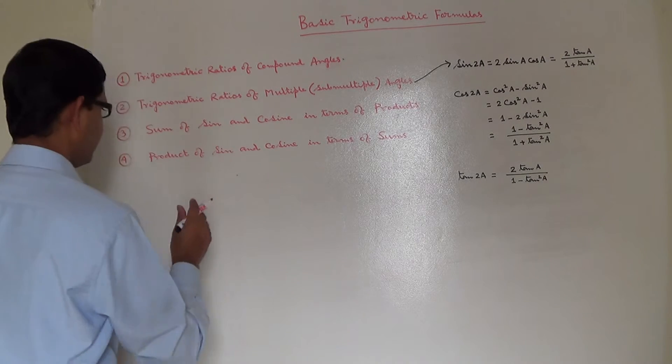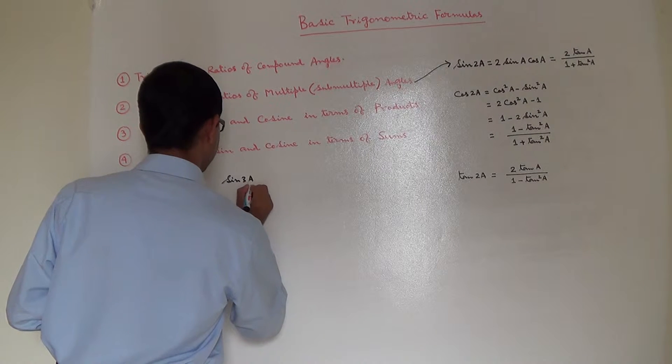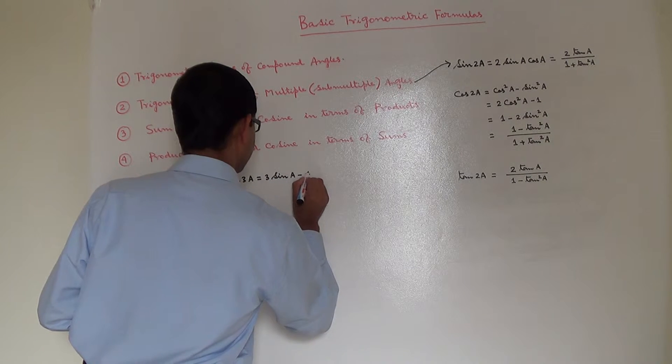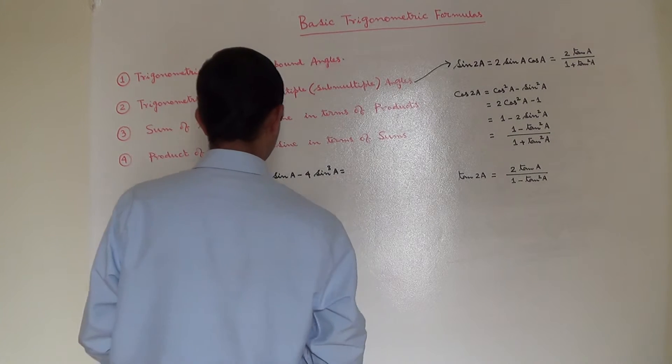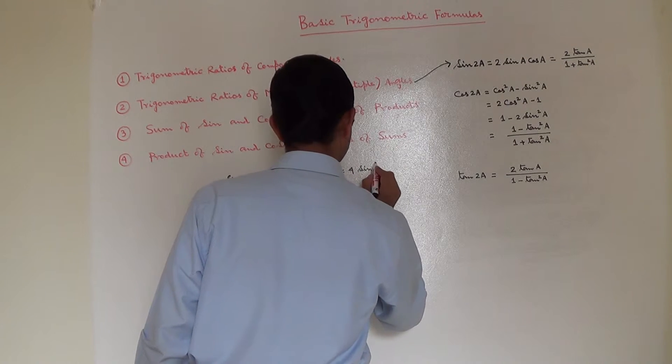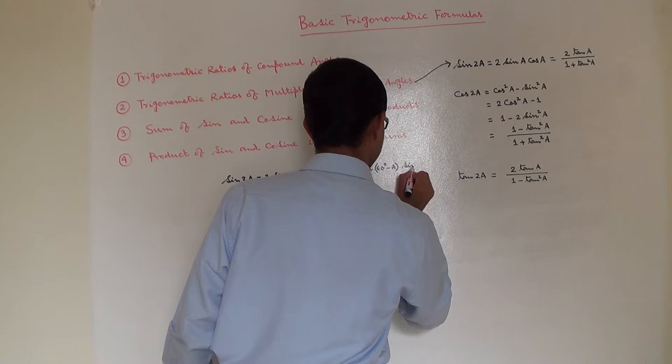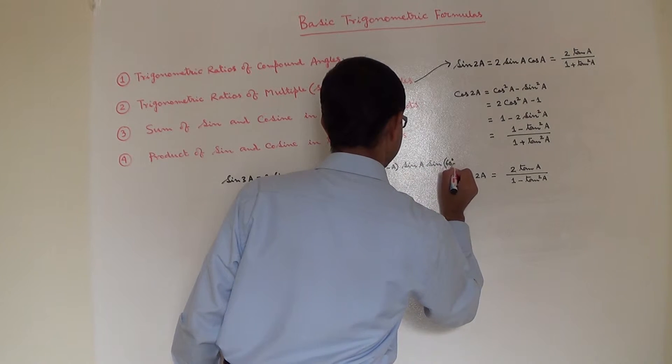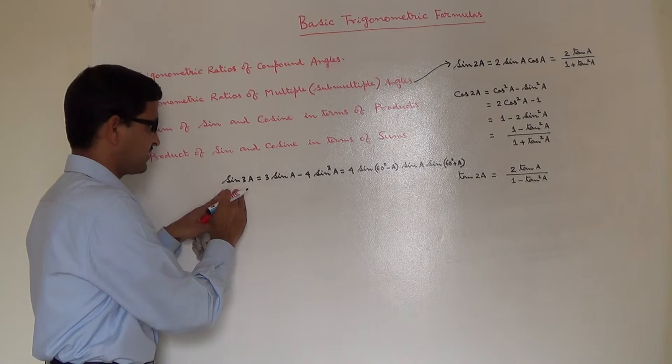Now we will see the formula for sin 3A. Sin 3A is equal to 3 sin A minus 4 sin cube A. That is also equal to 4 into sin of 60 degrees minus A into sin A into sin of 60 degrees plus A. So there are two different flavors of sin 3A.